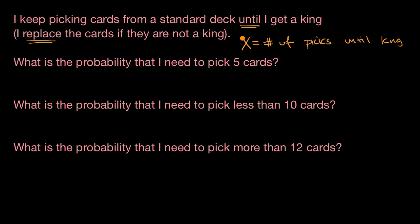For this geometric random variable, what's the probability of success on each trial? Remember, one of the conditions for a geometric random variable is that the probability of success does not change on each trial. Well, the probability of success is going to be equal to four kings in a standard deck of 52, and this is the same thing as one over 13.